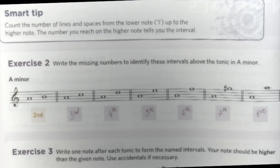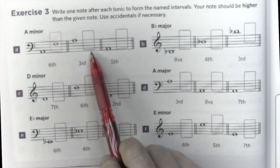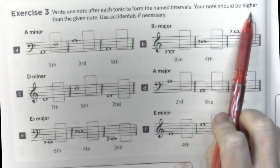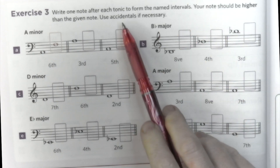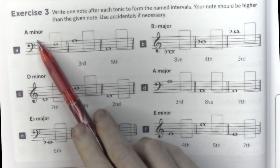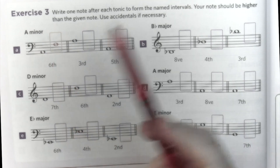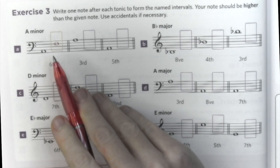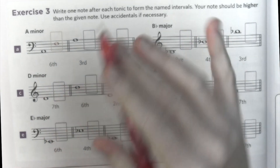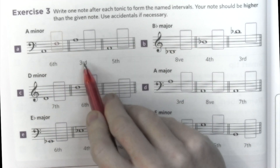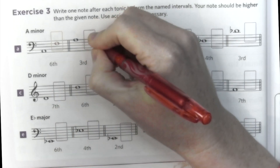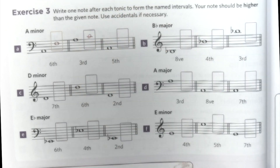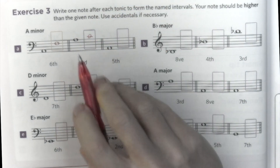Exercise three. Here we need to write the notes indicated with a number of intervals and the notes should be higher, but we also need to add the accidental. So it is important to know the key we are in. In A minor, we have no sharps, no flats, unless it's the leading note. So a third from here is one, two, and three — on the ledger line.